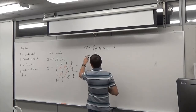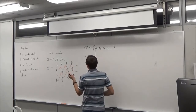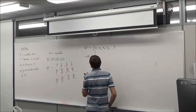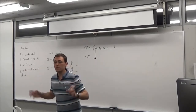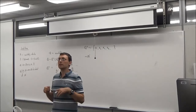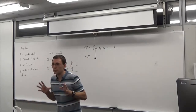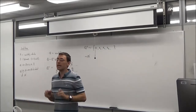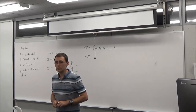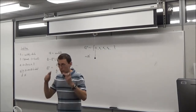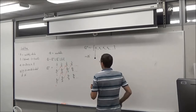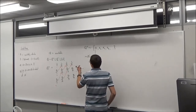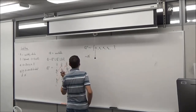Since Q-plus is equivalent to the natural numbers and Q-minus is equivalent to the natural numbers, and a countable union of countable sets is countable, Q itself is countable. This procedure shows that Q is countable.